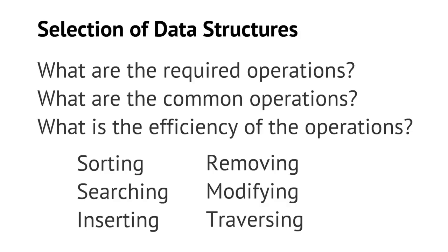This is one of the important things in software development: selecting the appropriate data structures. We have to think about what operations are required, what the common operations are, and what the efficiency of those operations is. Are we going to be searching through this data a lot? Are we going to be inserting or removing data a lot? If we do a lot of searching compared to very few insertions or removals, that would make us select one data structure over another. It really is about trade-offs and figuring out how your data is going to be used.